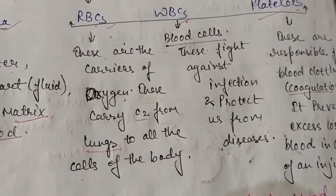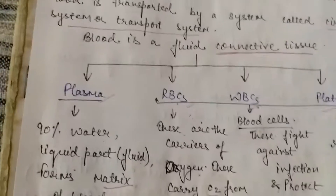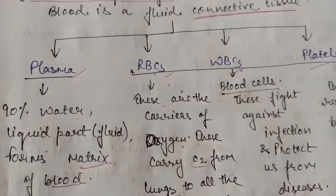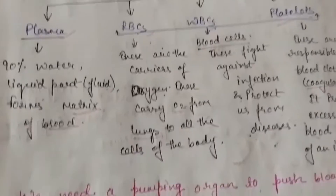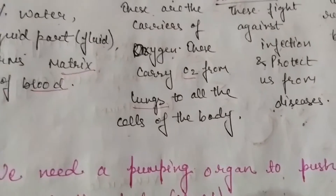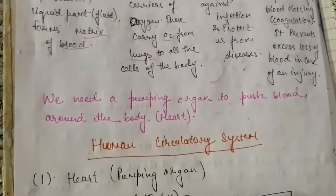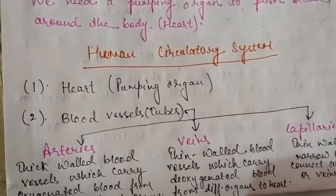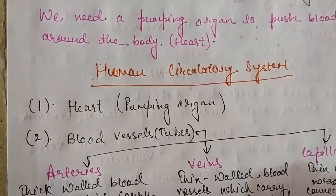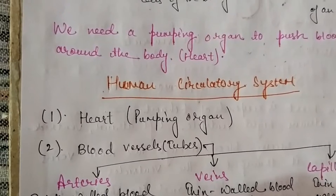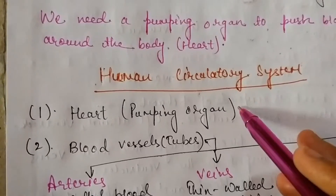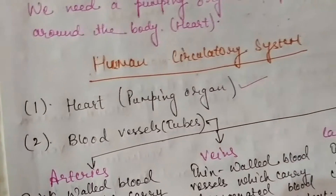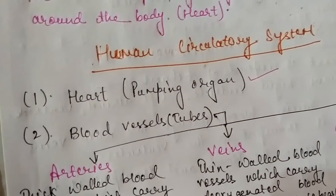What is the medium of transportation? Transportation is through blood. We need a pumping organ to push blood around the body — that is the heart. The heart is responsible; it is the pump. Now, the human circulatory system has two main parts: the heart, which is the pumping organ, and the blood vessels, which travel to the whole body.